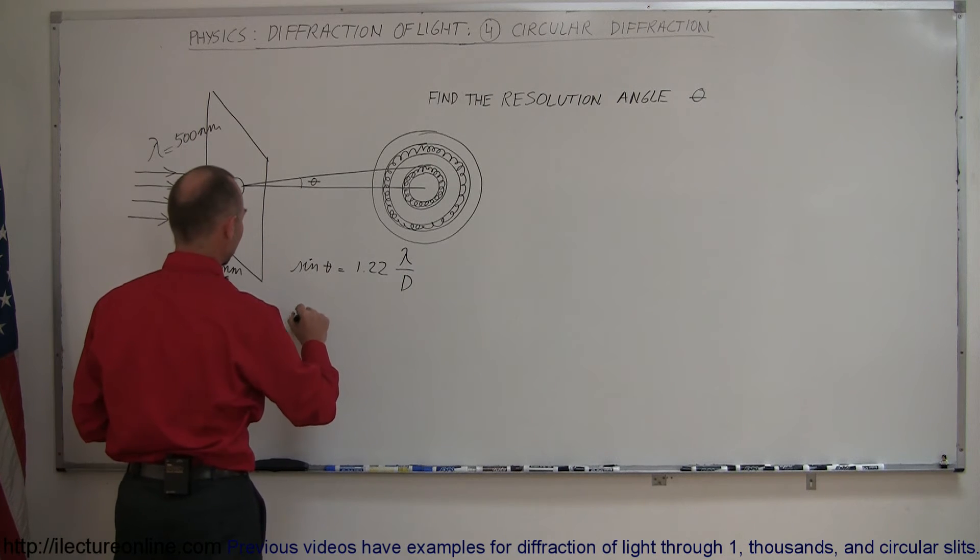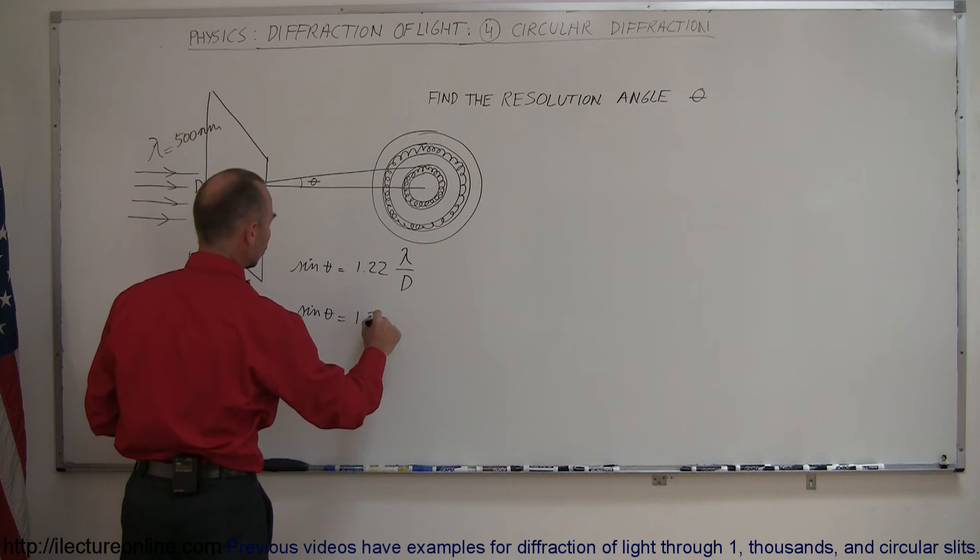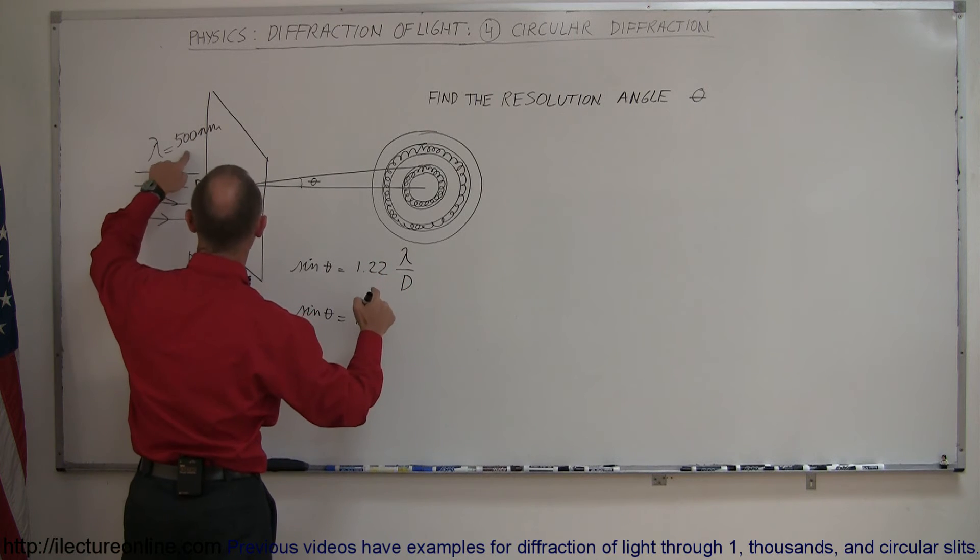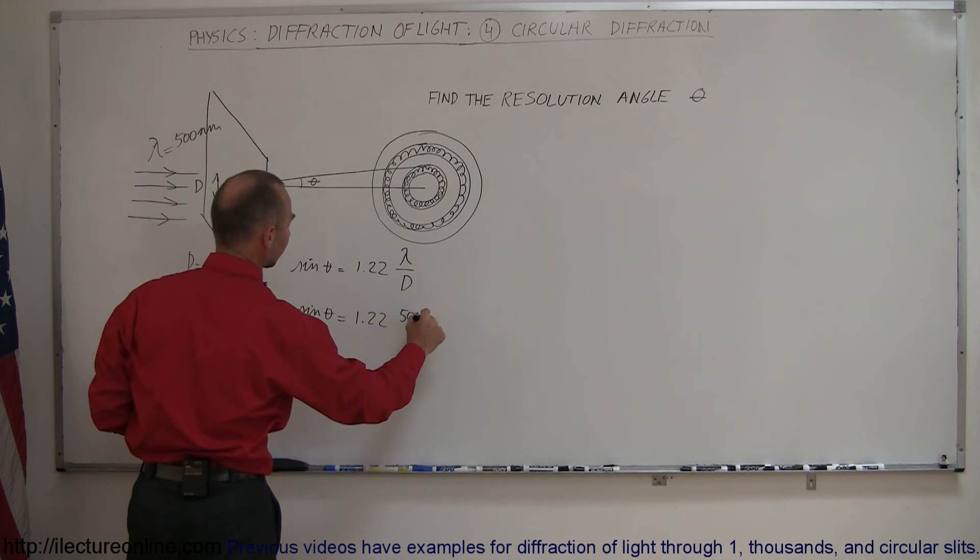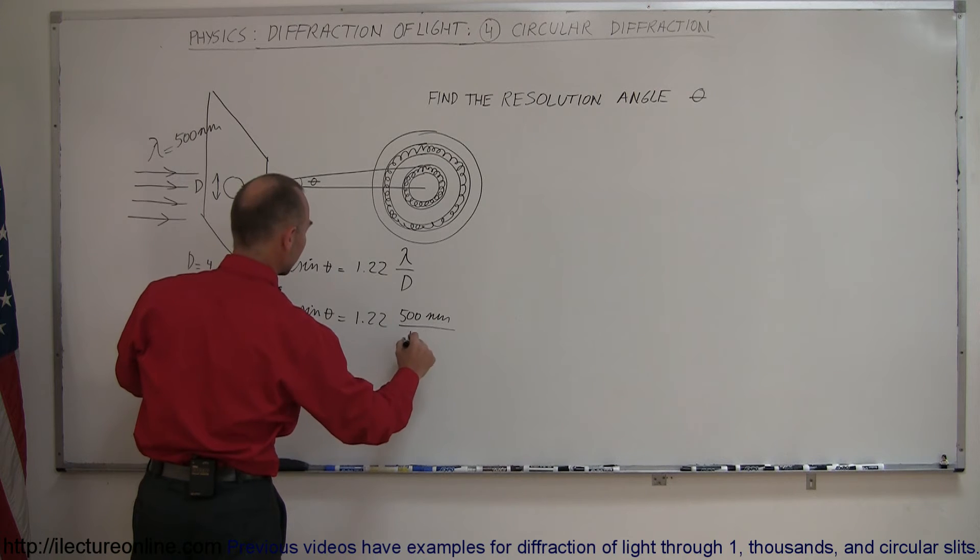We can say that the sine of theta is equal to 1.22 times lambda. Lambda would be equal to 500 nanometers, and we divide that by 4 millimeters.